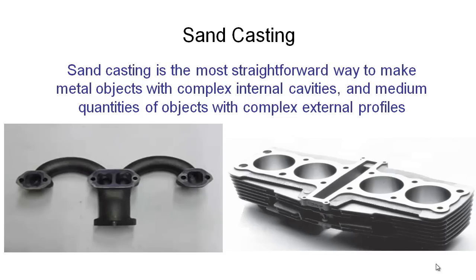Like the exhaust manifold, this engine block would be cast in one piece and then there are going to be some very highly precise machining operations performed on the bores — these cylinder bores here — to bring them up to the correct tolerance for the pistons to work within. It's also got holes drilled and probably tapped to take studs which would bolt down the head of the engine. So these are a couple of typical examples of parts that are commonly manufactured using the casting process.